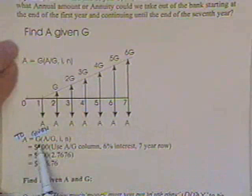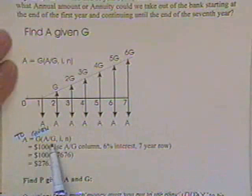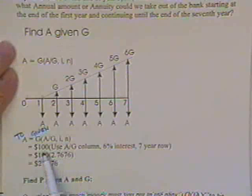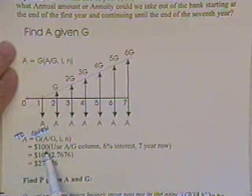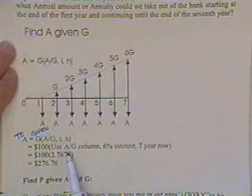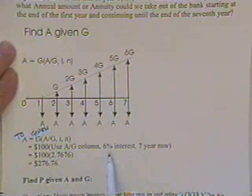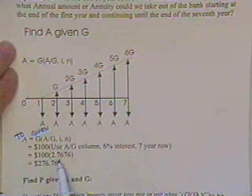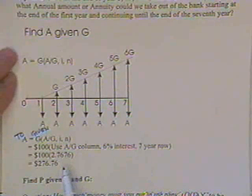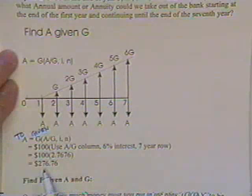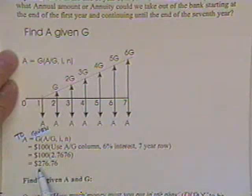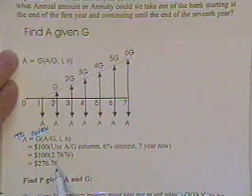Then I would use the A over G column, the I percent, the n years, the gradient that I told him I will be able to pay back is $100. So I use the A over G column, 6% interest, 7-year row. Go in the book, you'll find the numbers 2.7676.